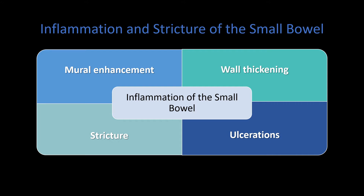When we think about inflammation and stricture within the small bowel, we can see it manifest in a few different ways. With inflammation of the small bowel, we may see patterns of mural enhancement or hyper-enhancement, wall thickening, strictures that develop, and ulcerations. We'll go through each one of these different manifestations in the screencast.